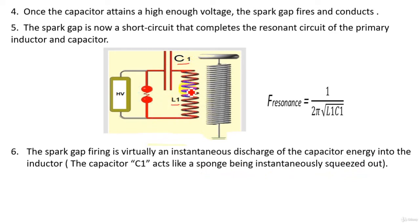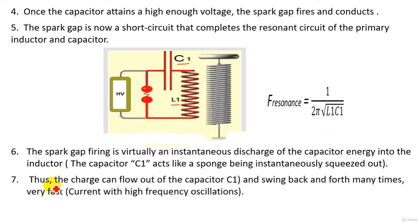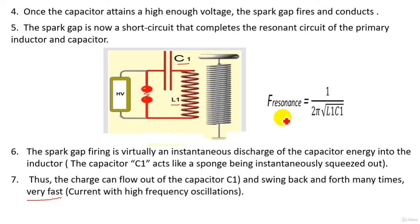High frequency is obtained by adjusting the values of L1 and C1. The charge flows out of capacitor C1 and swings back and forth many times very fast due to resonance in the primary coil. This means that current with high frequency oscillations flows in the primary circuit of the Tesla coil, obtained due to the resonant circuit of the primary coil.